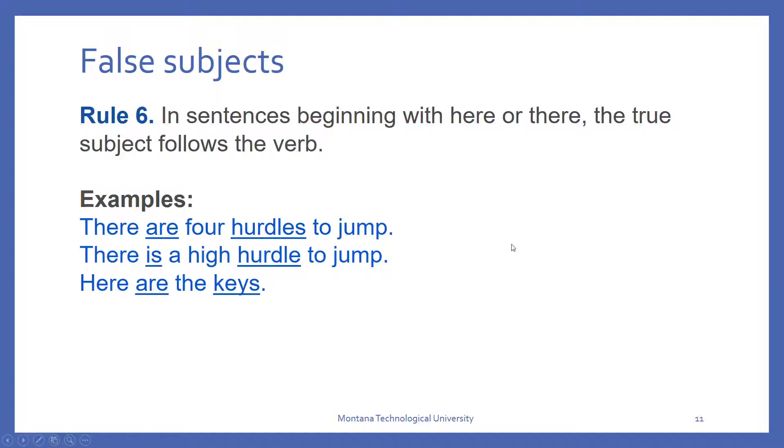Our false subjects, beginning with here, there, it, whatever, the true subject in these sentences always follows the verb. My guidance to you is always rewrite the sentence to get rid of those false subjects because they're the bane of technical writing. Here, we need to make sure that our subject, which is actually hurdles, matches our verb. Hurdle is, keys are. You would rewrite this to say, four hurdles are there to jump. A high hurdle is there to jump. The keys are here. Make sense?